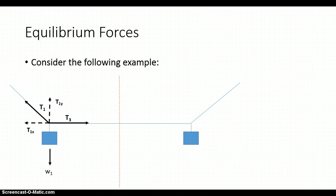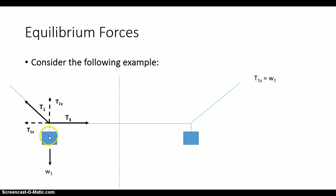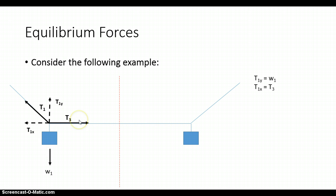Recall that this system has no movement in any direction. Because there is no movement, the summation of forces in the y direction equals zero, meaning T1y is opposing W1, so T1y is equal to W1. We may also say that T1x is equal to T3, because there is no movement in the x direction — these two forces must balance each other.